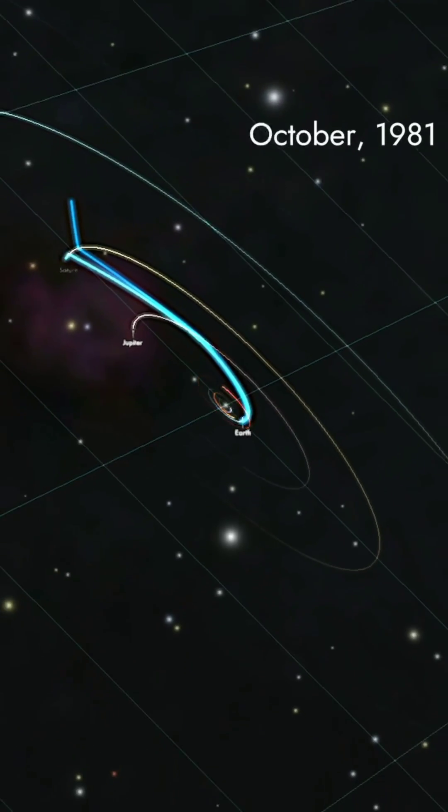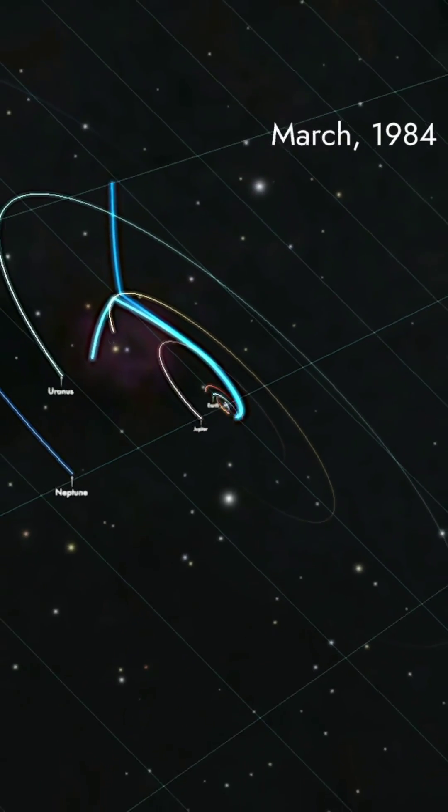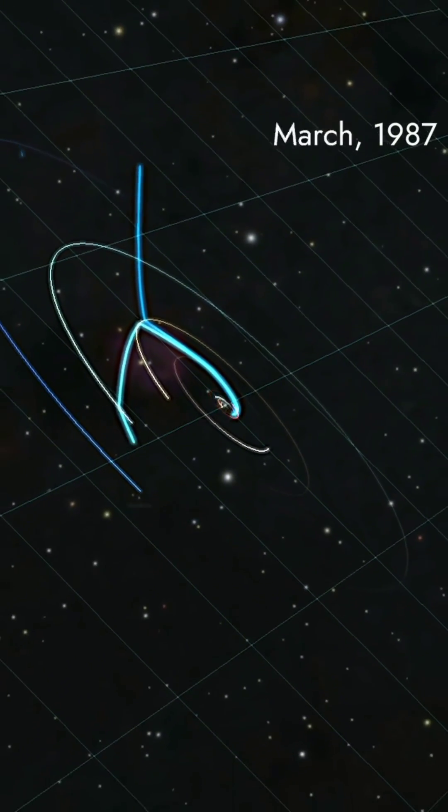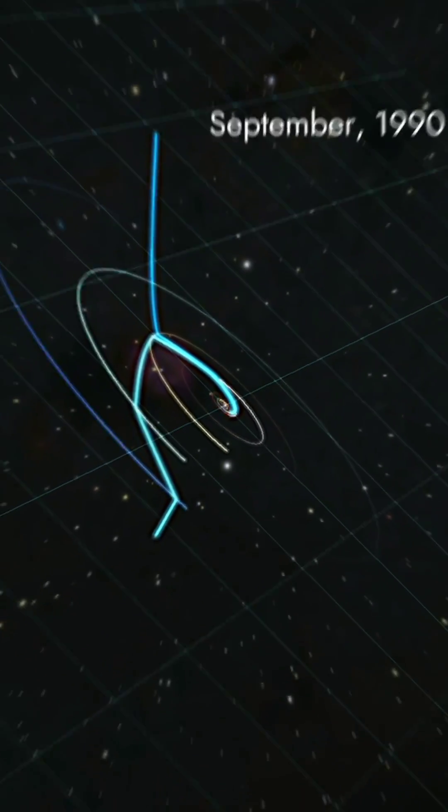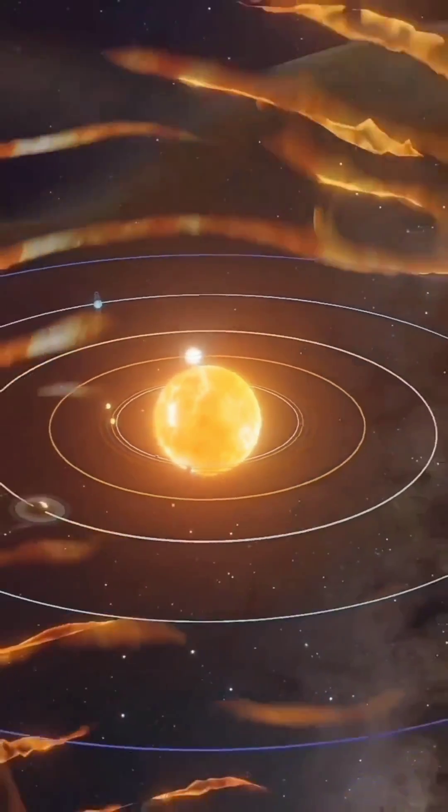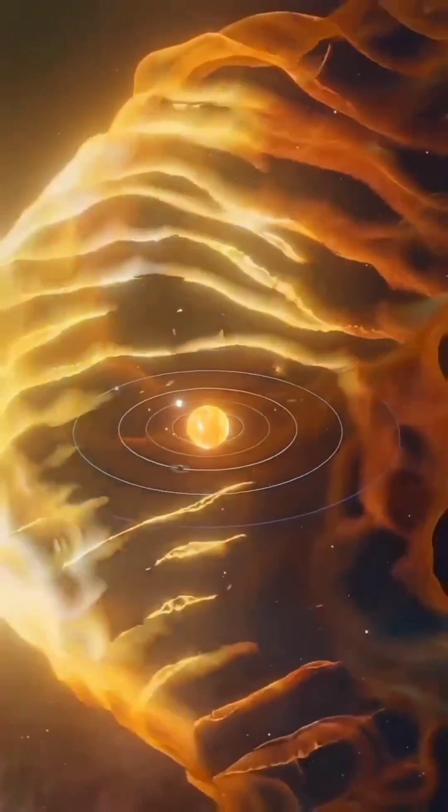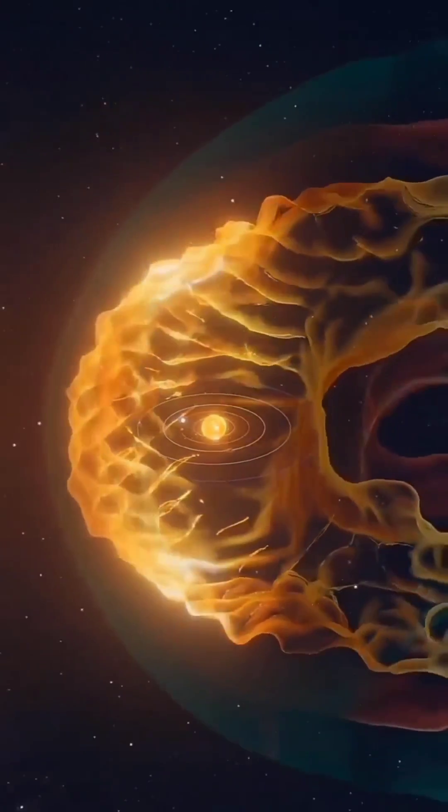However, both Voyager and the Earth remain tethered to the sun as the sun moves. Flybys and slingshot maneuvers are possible because the entirety of the solar system collectively maintains constant synchronous motion within the sun's gravitational well.